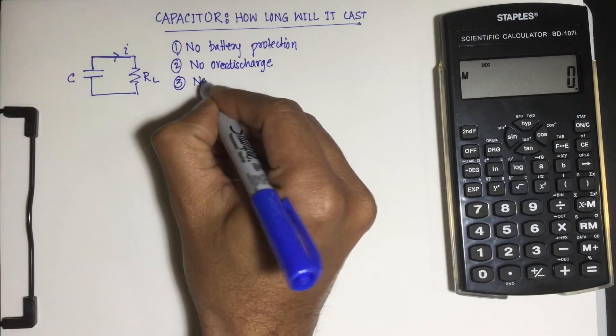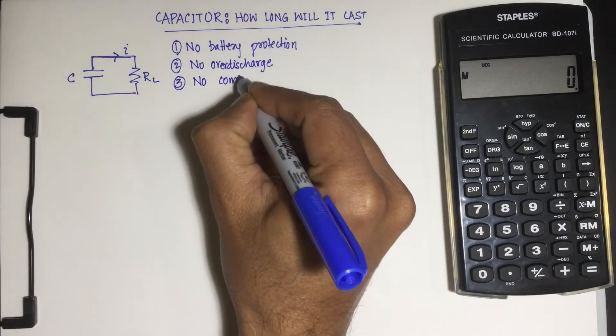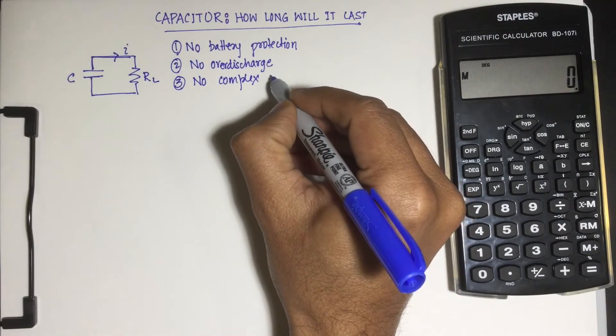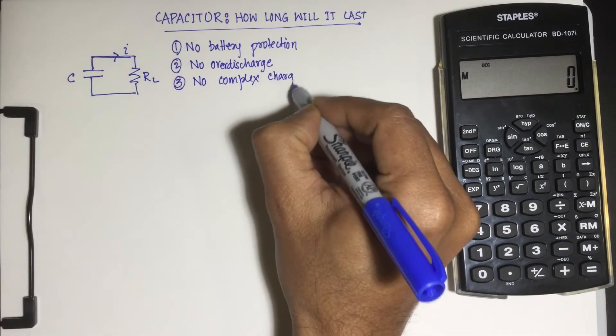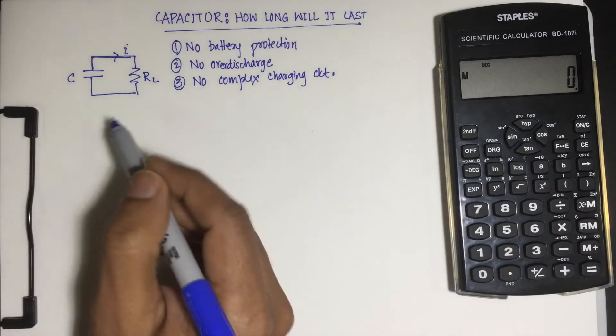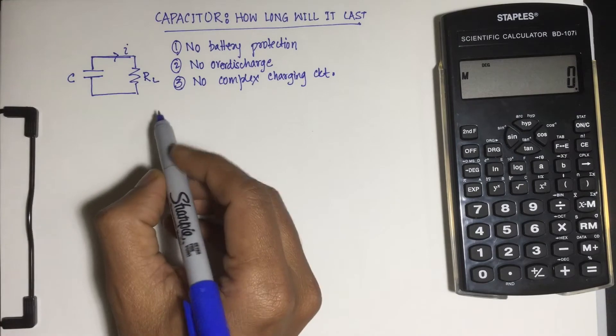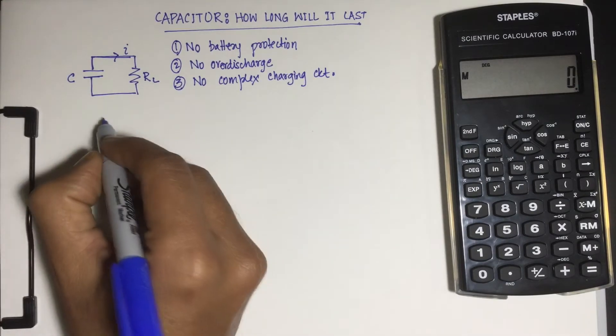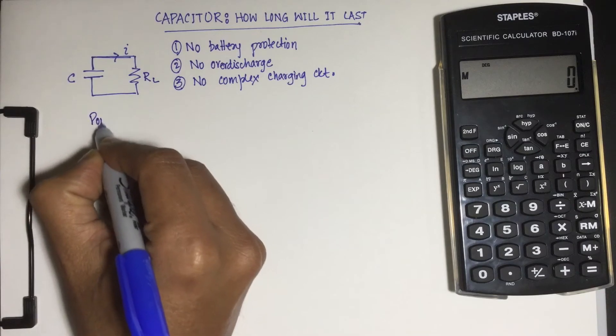Number three is no complex charging circuit. You don't need any complex charger cells. Charging a capacitor is fairly simple. The only time you need some complexity is when they are connected in series, so you need to balance them out, but that's not the case we are looking at here.